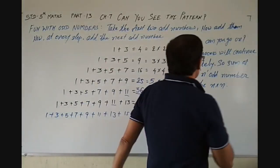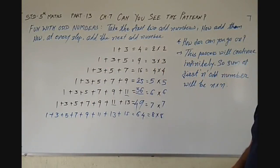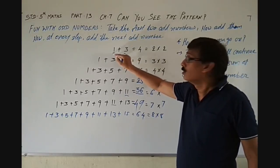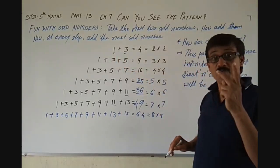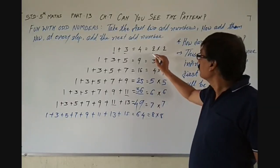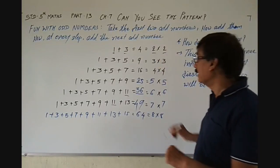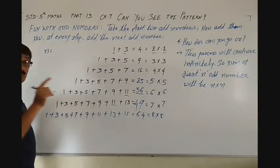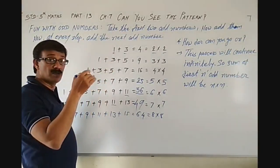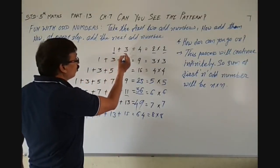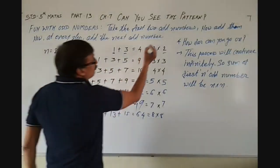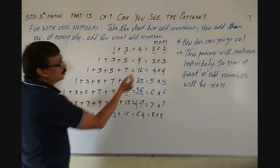Let me make you understand this. Sum of the first N odd numbers — how many odd numbers are there? If there are 2, then N is equal to 2. The first 2 odd numbers are 1 and 3. So it is N multiplied by N, that is 2 multiplied by 2.